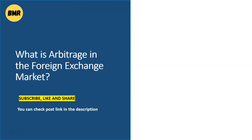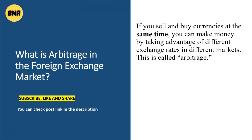What is arbitrage in the foreign exchange market? If you sell and buy currencies at the same time, you can make money by taking advantage of different exchange rates in different markets. This is called arbitrage — people can make money by taking advantage of the inefficiencies in the market.